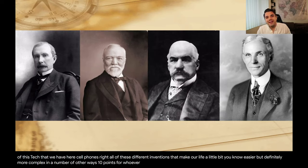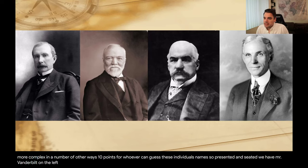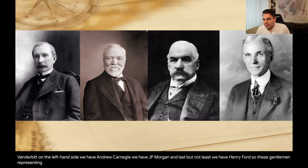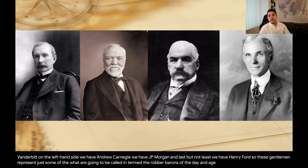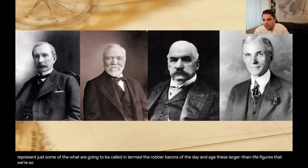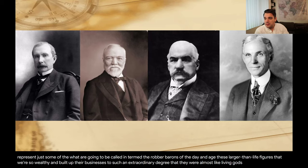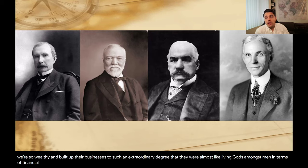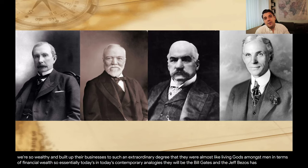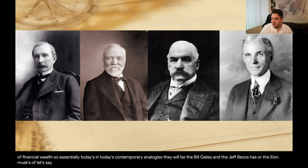Ten points for whoever can guess these individuals' names. Seated here we have Mr. Vanderbilt on the left-hand side, Andrew Carnegie, J.P. Morgan, and last but not least, Henry Ford. These gentlemen represent some of what are termed the robber barons of the day and age — larger-than-life figures so wealthy and who built up their businesses to such an extraordinary degree that they were almost like living gods amongst men in terms of financial wealth. In today's contemporary analogies, they would be the Bill Gates, Jeff Bezos, or Elon Musks of the Gilded Age.